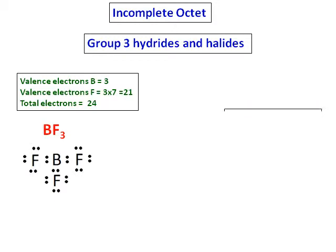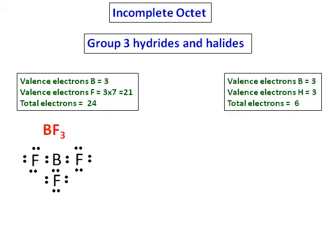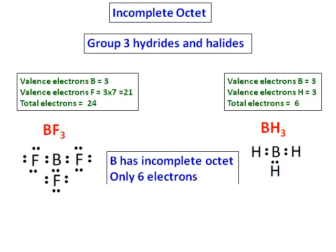Similar is the case with boron trihydride. It has only 6 electrons around it. Boron has incomplete octet, has only 6 electrons.